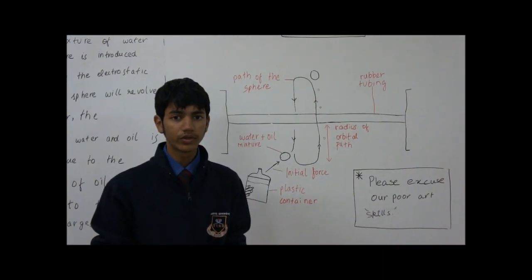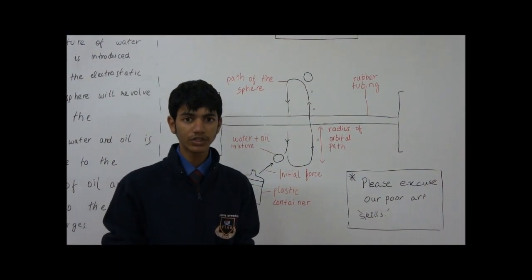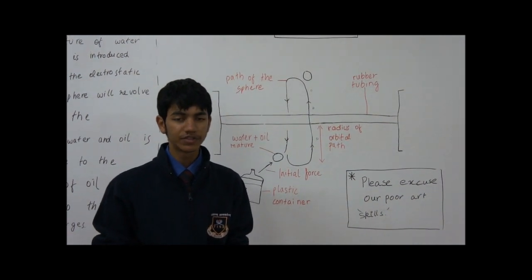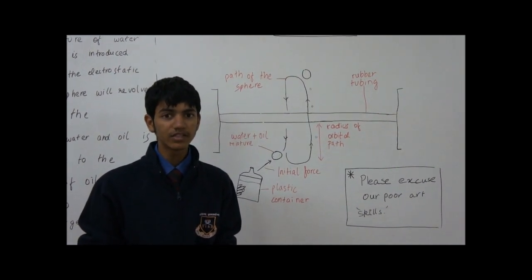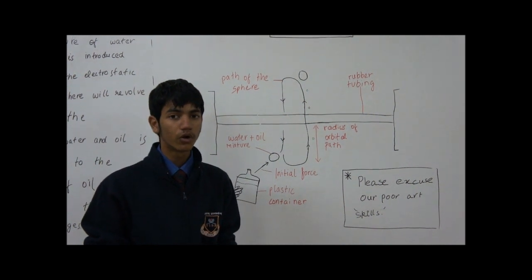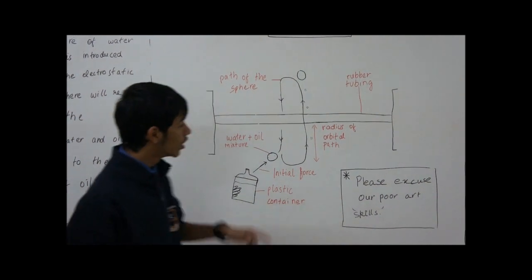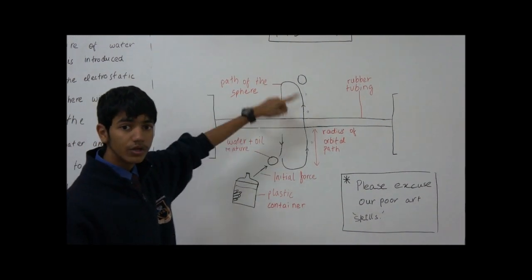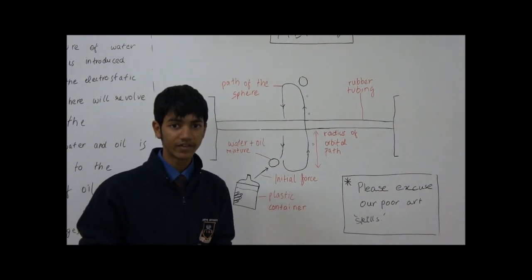As you saw in the video, even on Earth, electrostatic forces attract water due to the polarity of water. However, it's been seen in previous ISS experiments that in space, the sphere of water formed would not only be attracted by the electrostatic forces, but would indeed revolve around the rubber tube. This can be attributed to the absence of gravity.